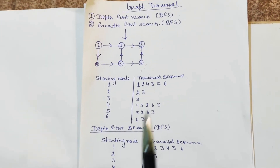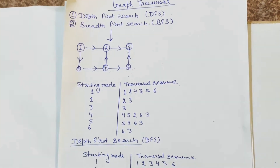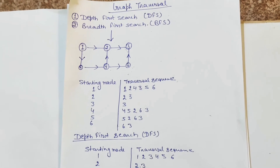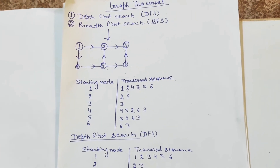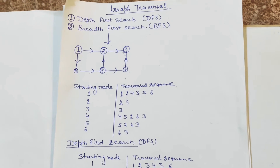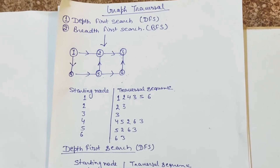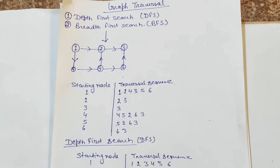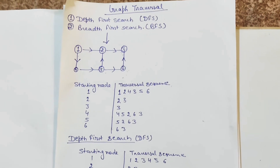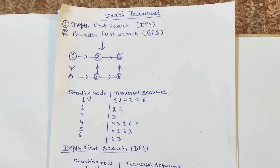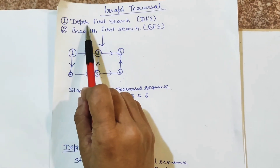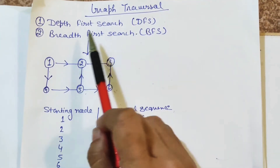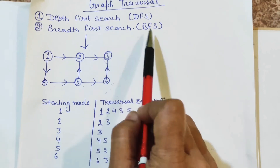Today students, our topic is graph traversal. As you know, graph is used to store a non-linear collection of elements. We need to write some algorithms to traverse from one node to another in a way so that vertices should not be visited again. There are two methods: the first is Depth First Search (DFS), and the second is Breadth First Search (BFS).